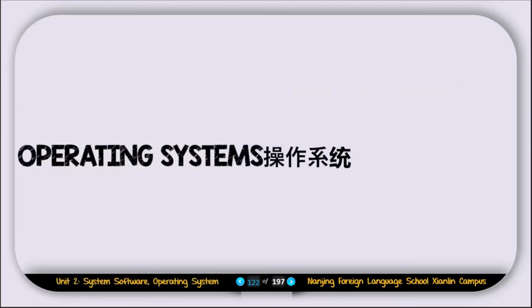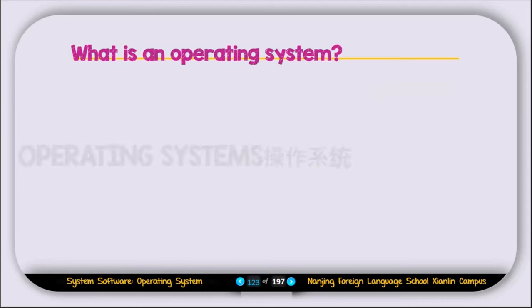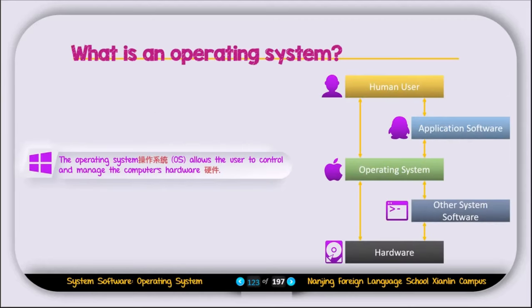Now let's discuss operating systems. What is an operating system? The operating system, or OS, allows users to control and manage the computer hardware. A computer is made up of hardware — we have different hardware, for example RAM, processor, input and output devices like mouse and keyboard. The operating system's job is to allow the user to control that hardware.